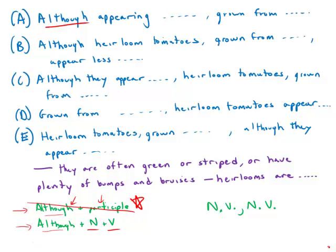For example, in A we have although appearing. So we have although and then a participle, not a noun and a verb. So A is out.